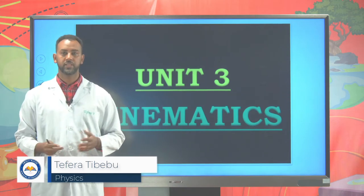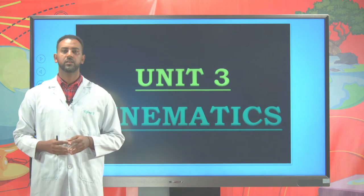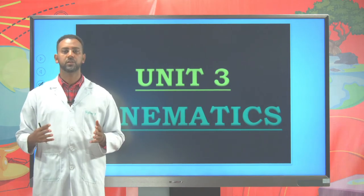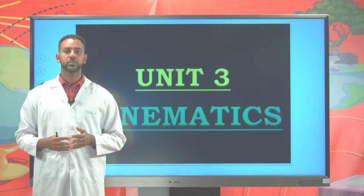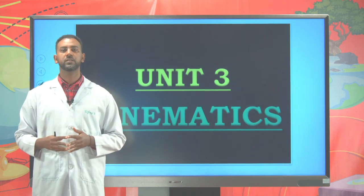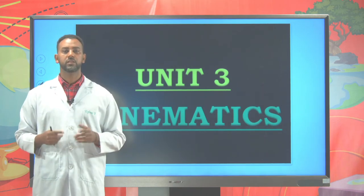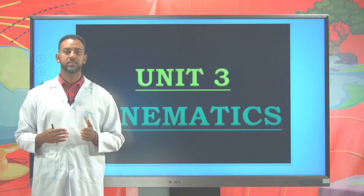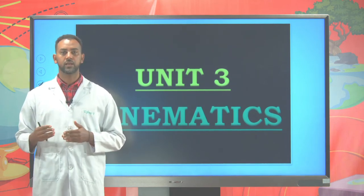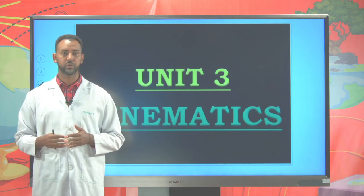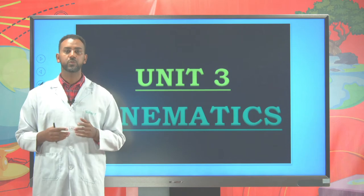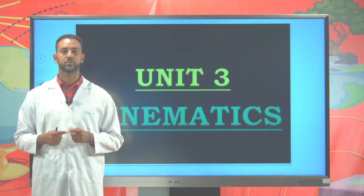Previously, we discussed vectors — we defined what vectors are, saw the different types of vectors, and how to operate with them. Vectors can be added or subtracted using geometrical and analytical means. We also saw vector multiplication: the cross product and the dot product. The sum or difference of two vectors always results in a vector, but the product may give a scalar or vector depending on the type. The dot product results in a scalar, so it is called the scalar product. The cross product results in a vector, so it is called the vector product.